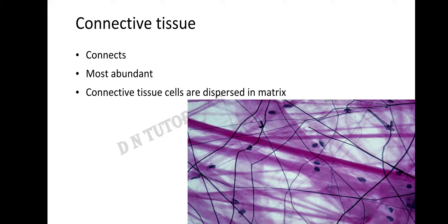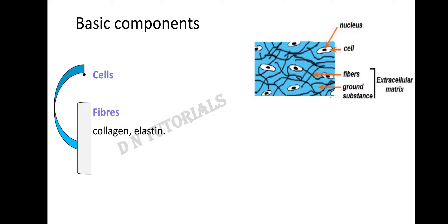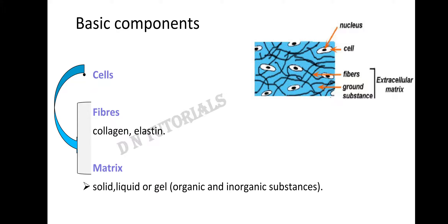The cells of the connective tissue are dispersed in the matrix. The basic components of the connective tissue are cells, fibres, and matrix. These cells of the connective tissue form the fibres and the matrix. There are two types of fibres: collagen and elastin. Collagen gives strength and elastin provides elasticity to the skin. The matrix can be solid, liquid, or gel-like, and can be made up of organic and inorganic substances. The matrix is the ground substance where the cells are arranged.